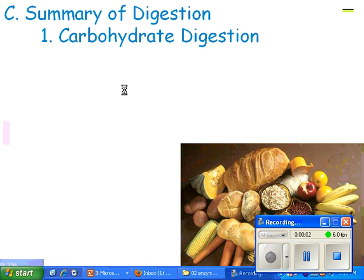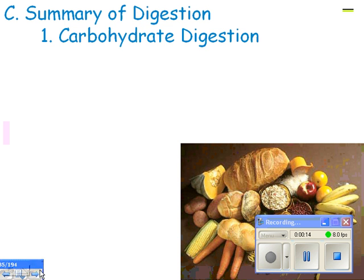Summary of digestion — we talked about each of the organs, now we're going to talk about where each of the polymers are broken down. There are carbs, lipids, proteins, and nucleic acids. Let's talk about carbohydrates first.